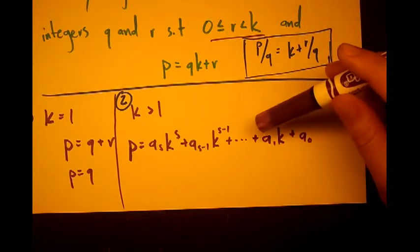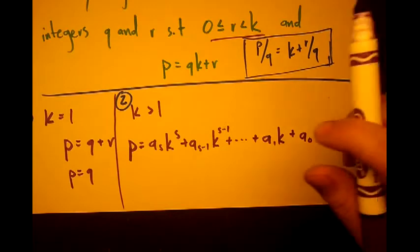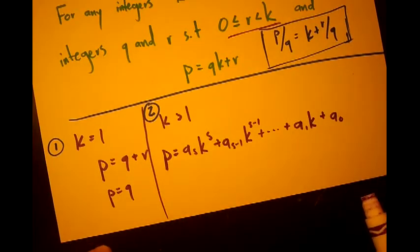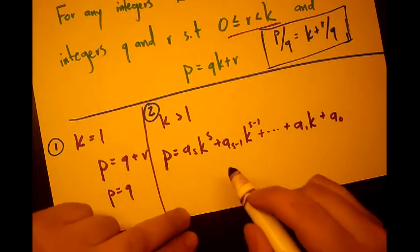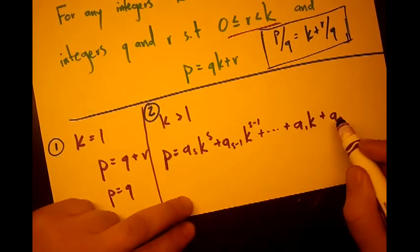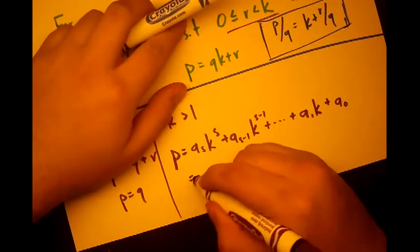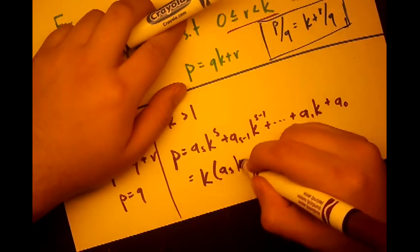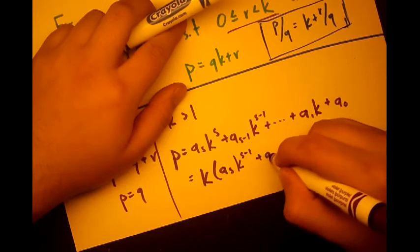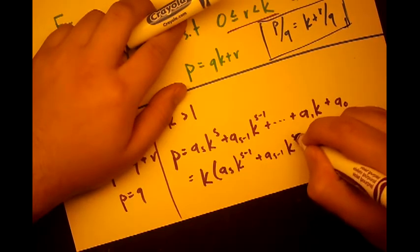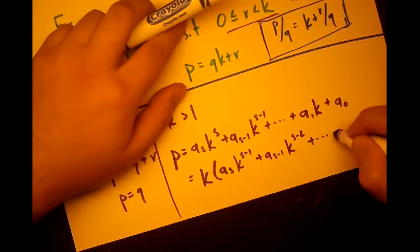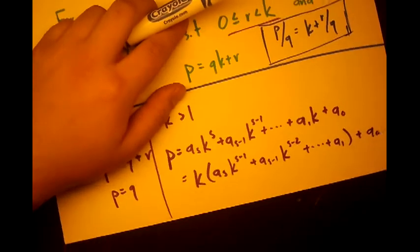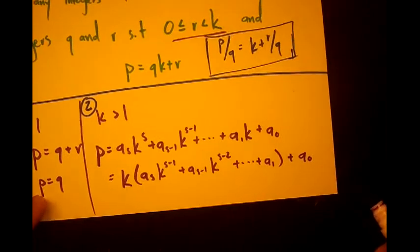But quick refresher, all the ai's have to be less than k. Okay, so this is our p. And we've written, and now what we can do is we can factor out a k out of all the terms except the last one which has no k to give. So we're going to do it like this. Factor k: a sub s k to the s minus 1 plus a sub s minus 1 k to the s minus 2 plus dot dot dot.